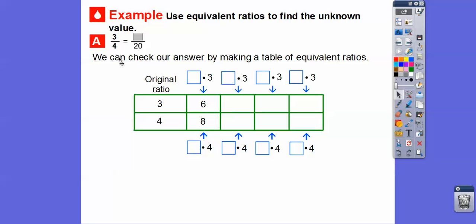Starting with 3 to 4, we multiply the top and bottom by 2, 3, 4, and 5. So 2 times 3 equals 6, and 2 times 4 equals 8 — that's 6 over 8. Then 3 times 3 is 9, and 3 times 4 is 12 — giving 9 over 12. Then 4 times 3 is 12, and 4 times 4 is 16 — giving 12 over 16. Finally, 5 times 3 is 15, and 5 times 4 is 20. So we get our missing numerator of 15 by checking with the table.